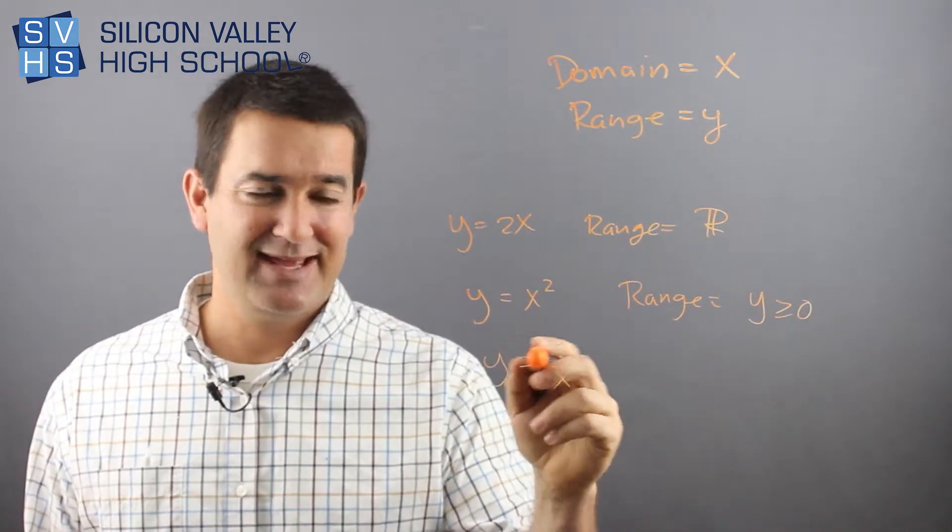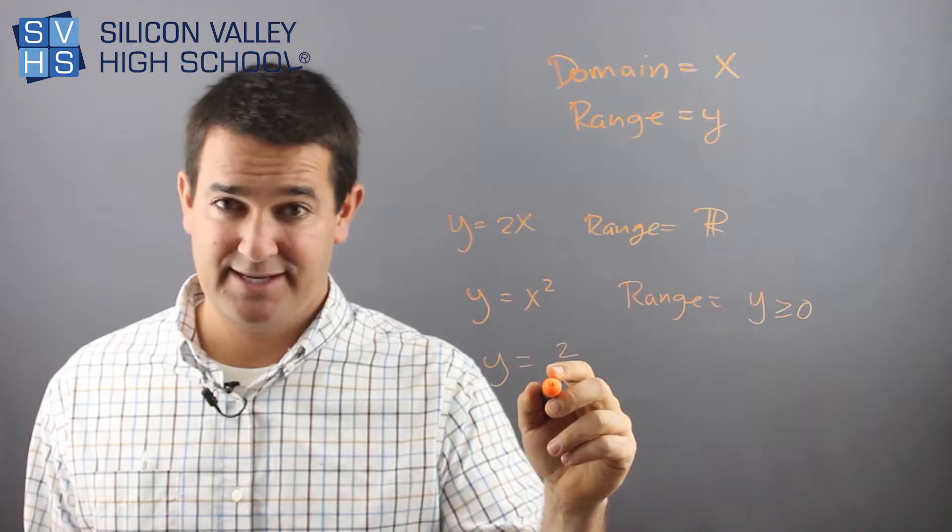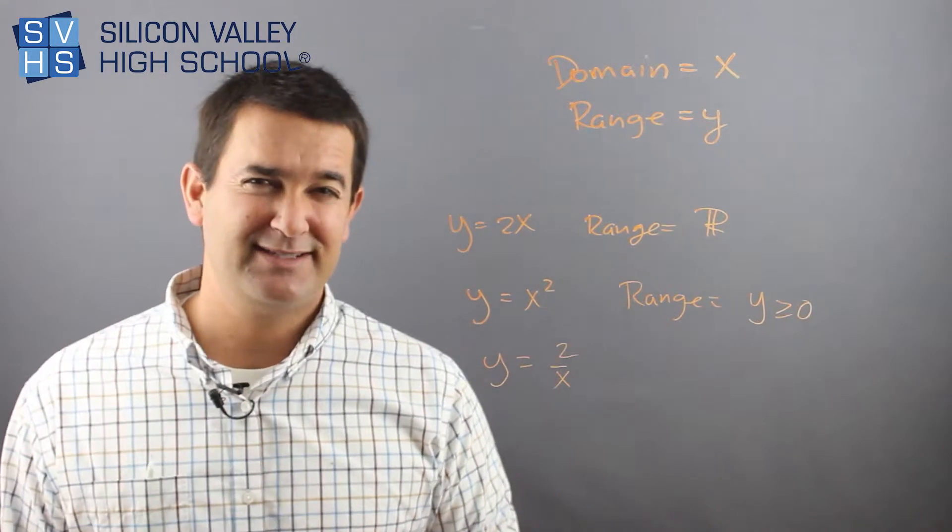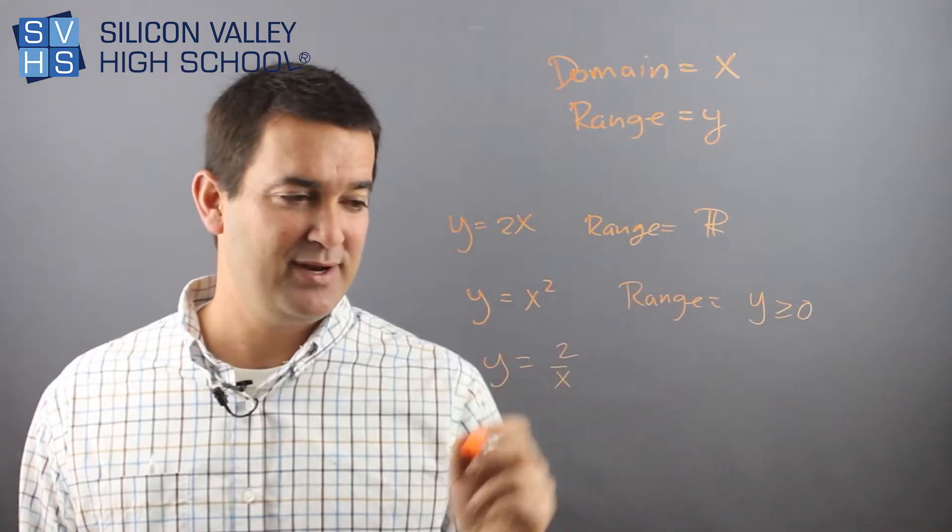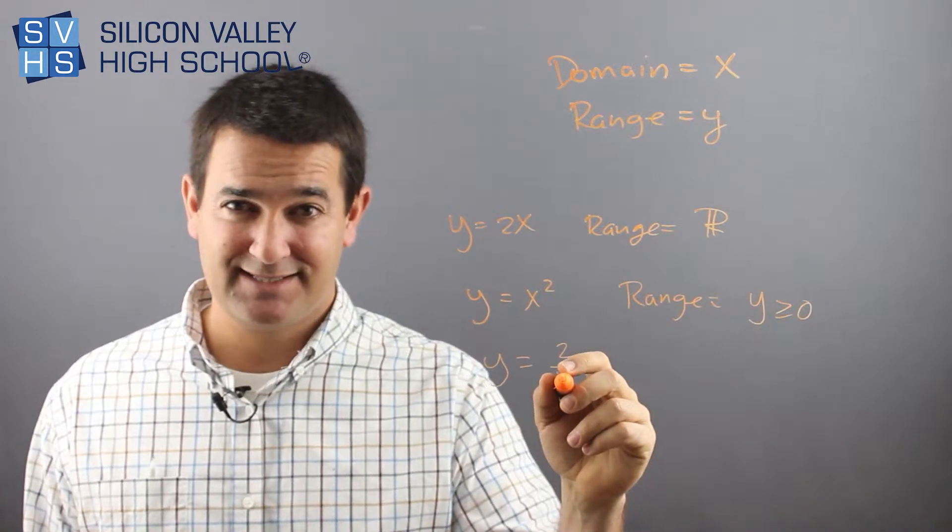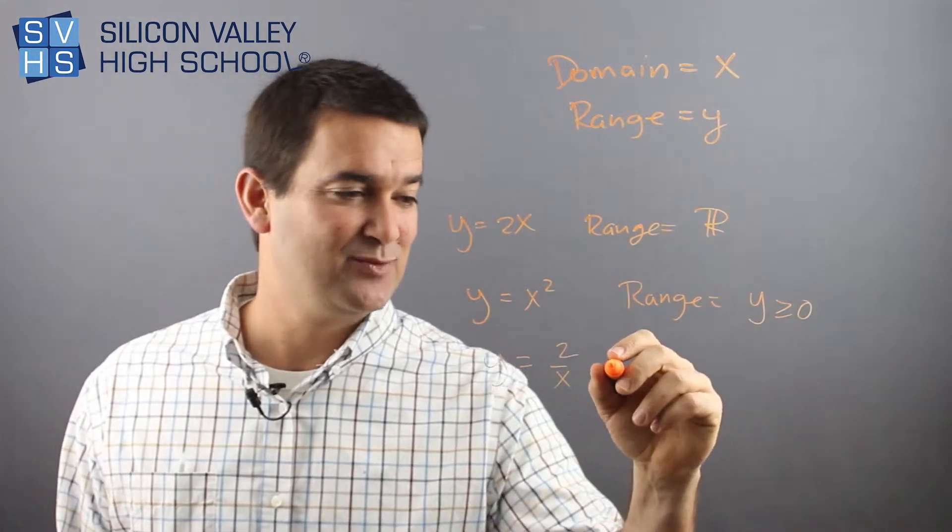X domain is not all real numbers, and so neither is the range here. You can get a positive if I put 100 in here. I think I could get a negative if I put negative 100 for X. But can you ever get a zero? What could I put in for X to get a zero Y? The answer is nothing. If I put zero into X, that's illegal.